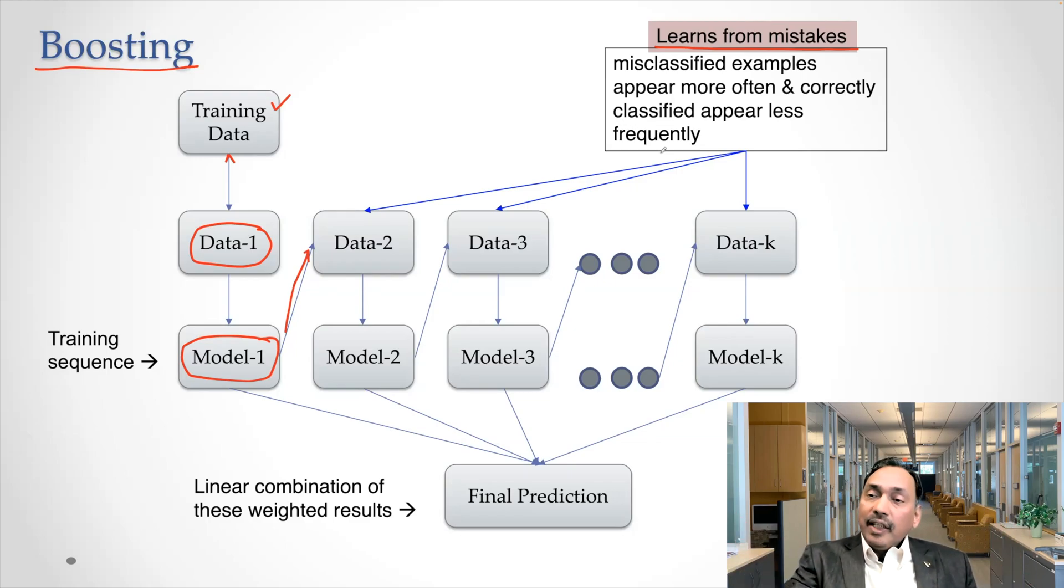So out of the original training data now, the probability of those data points where the model did not do well, the chances of those data points getting into the model will increase compared to those cases where the model was already doing well. So data two becomes a different data in that sense. You can say actually this data set actually is biased. It's biased towards those cases where the model made more mistakes. And it tries to give a second chance to improve the performance, overall performance of the model.